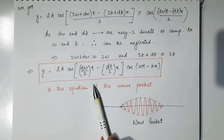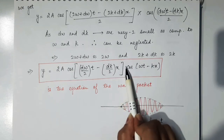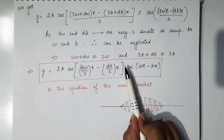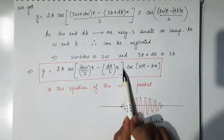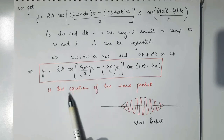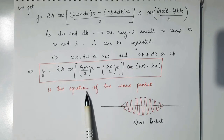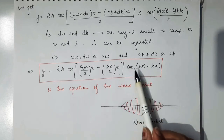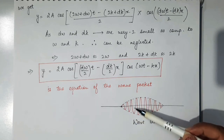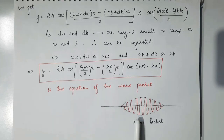This is the resultant of the superposition of two waves. The term cos(omega t − kx) is the harmonic part of the wave. Normally the amplitude would be constant, but here the amplitude contains the term 2A cos(d omega/2 · t − dk/2 · x), which is a variable term. So the amplitude of the modulated wave — the resultant of the superposition of two waves — is variable. This is the equation of the wave packet. The dotted envelope represents cos(omega t − kx), and the variable amplitude gives the wave packet its shape.